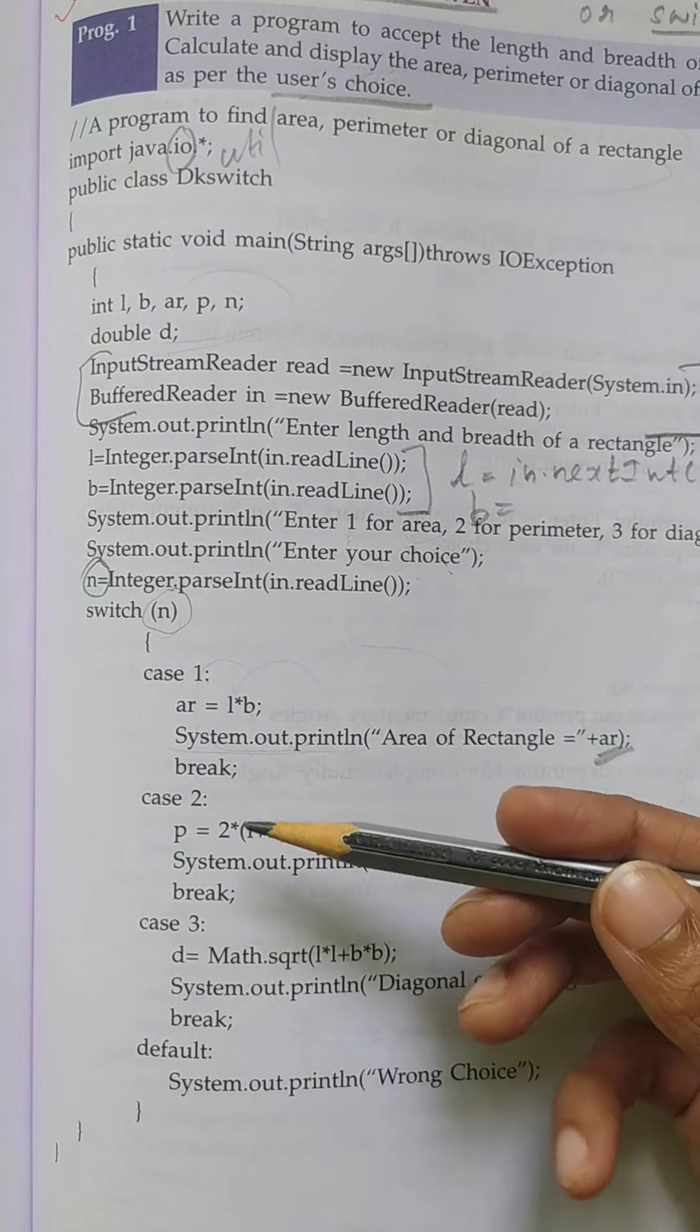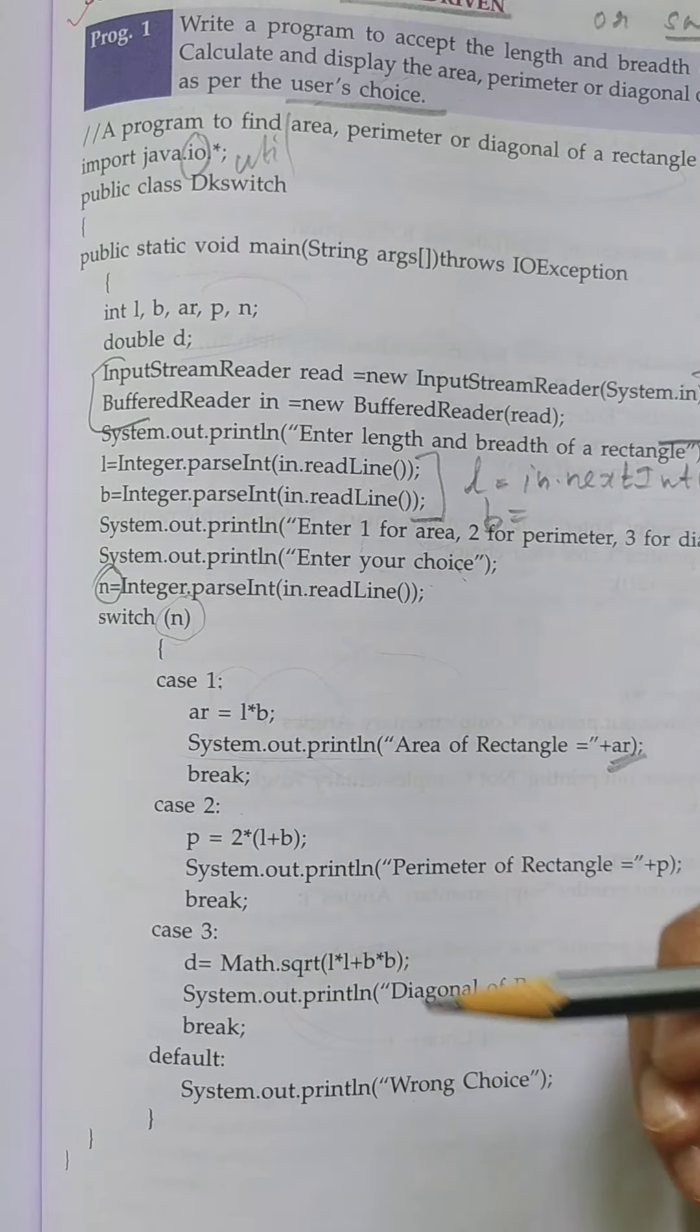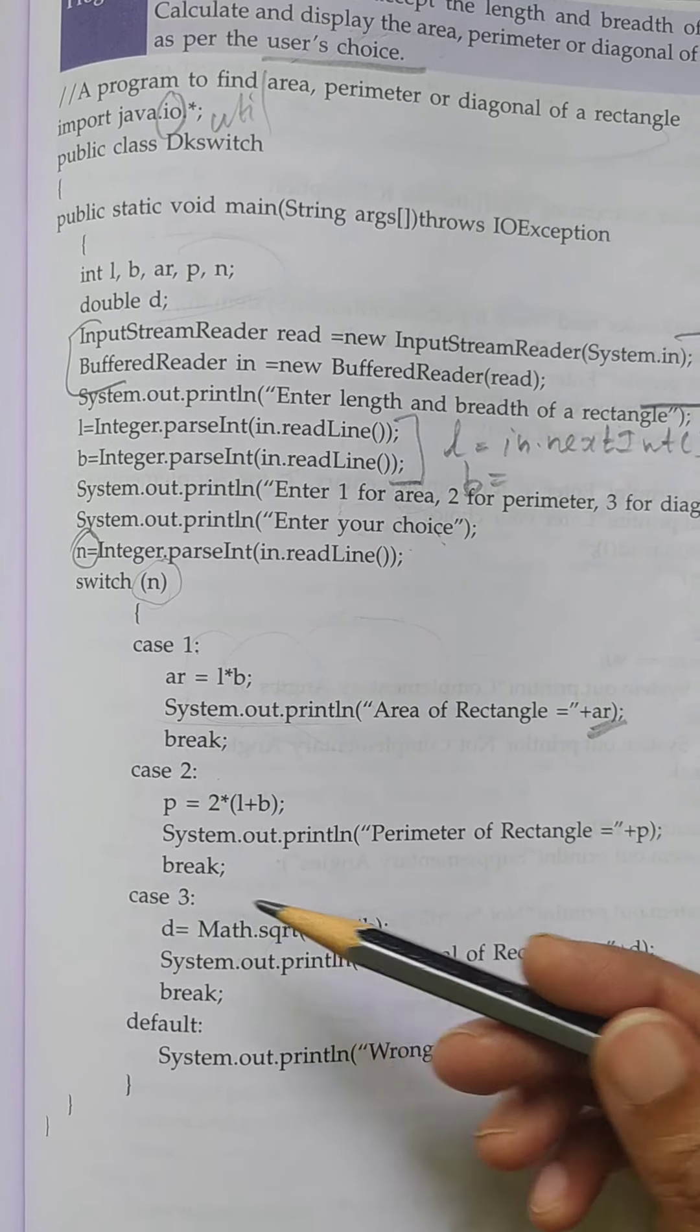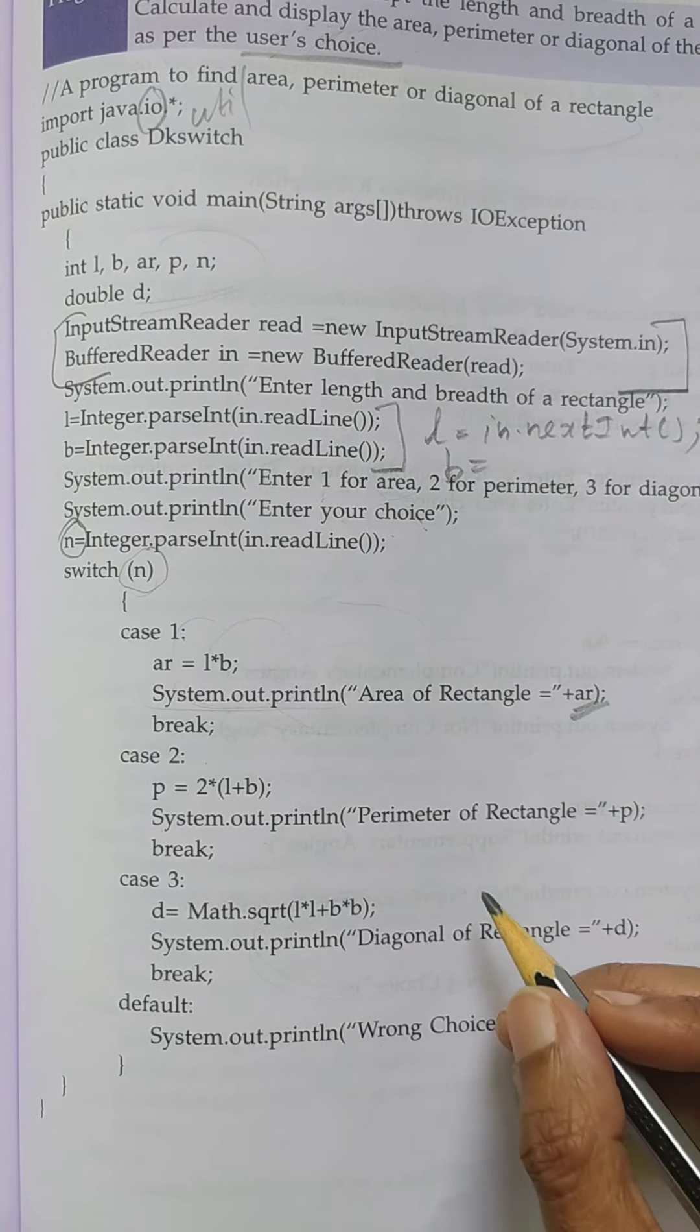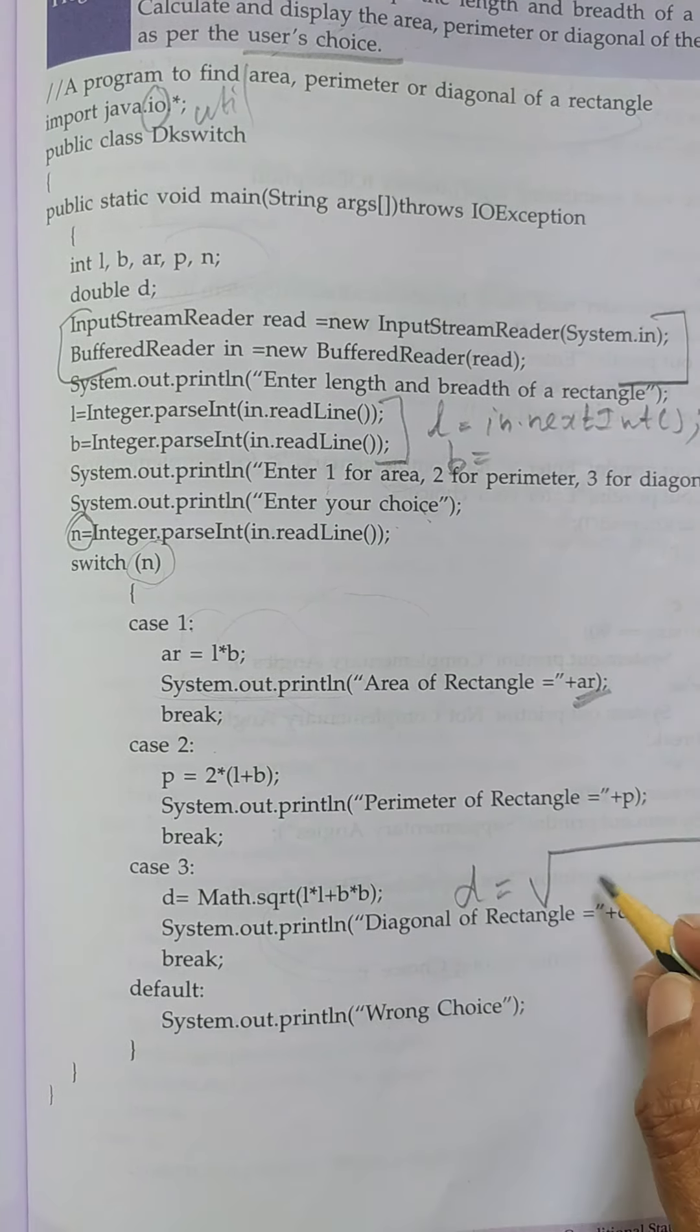Then the next case is opening: case 2 to find the perimeter, and case 3 is used to find the diagonal. How are we going to find the diagonal of a rectangle? Square root of L² + B².